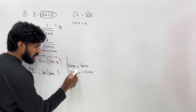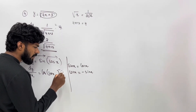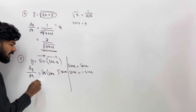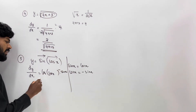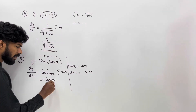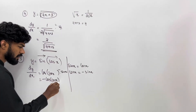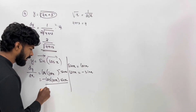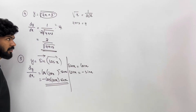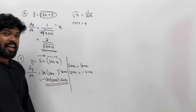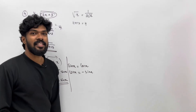The derivative is cos(cos x) times minus sin x. If you want to add: minus cos(cos x) times sin x. This is the answer. This is how the two functions work with the chain rule.